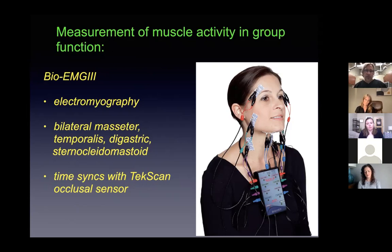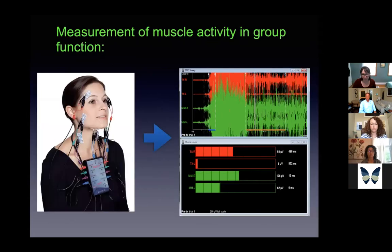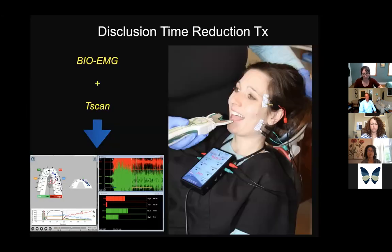We use bioEMG sensors placed on the temporalis and masseter muscles, which give us readings on muscle firing and activity during rest and biting. Combined with the T-scan, a digital occlusal technology sensor, we can measure muscle levels and bite force distribution. In the setup, the assistant holds the T-scan sensor while wearing bioEMG sensors on the neck, temporalis next to the eye, and masseter just in front of the ear.